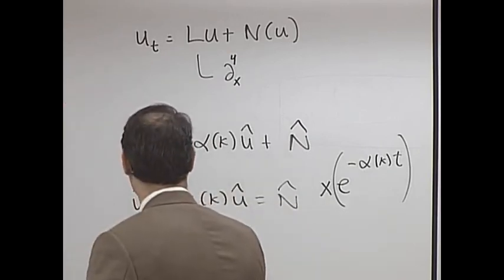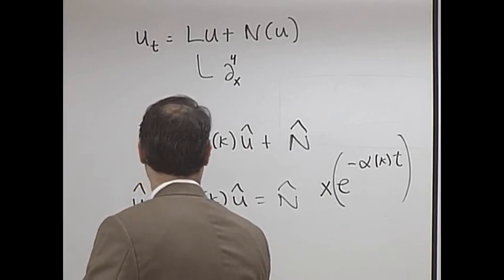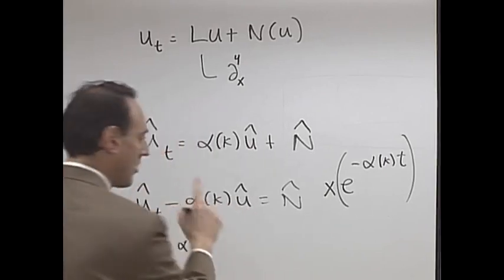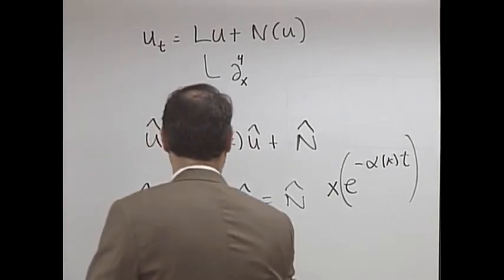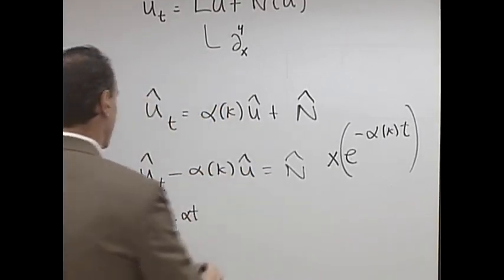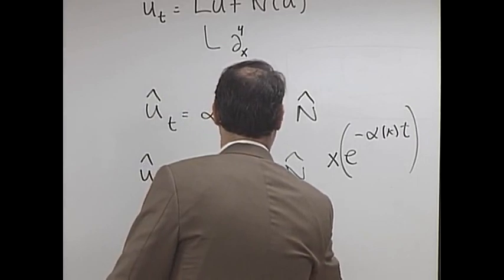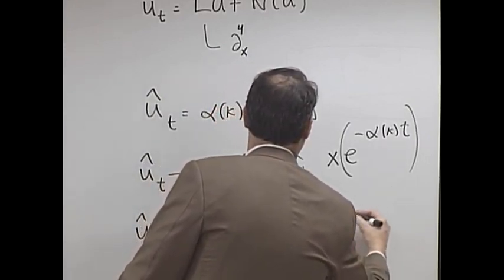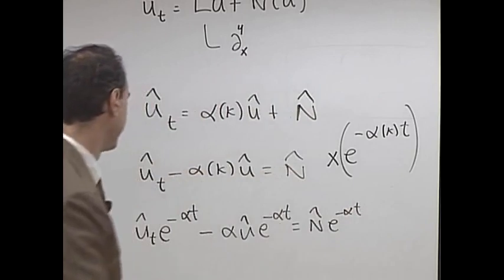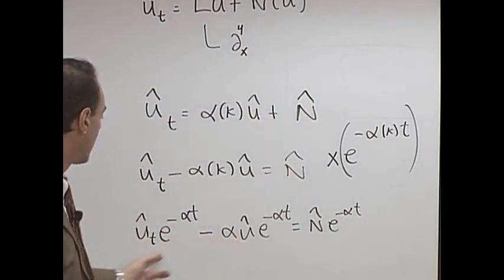What do I get? I get û_t e^(-αt) - I'm not gonna, I'm gonna drop the k for a moment but remember it's a function of k - minus α û e^(-αt) equals N̂ e^(-αt).